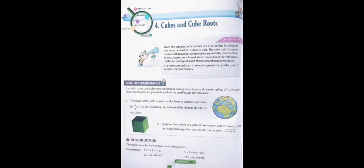Let's see another example — what will be the cube of 5? Our number is 5, and we need to multiply it by itself twice: 5 × 5 × 5. So our answer will be 125. This was the cube of 5.